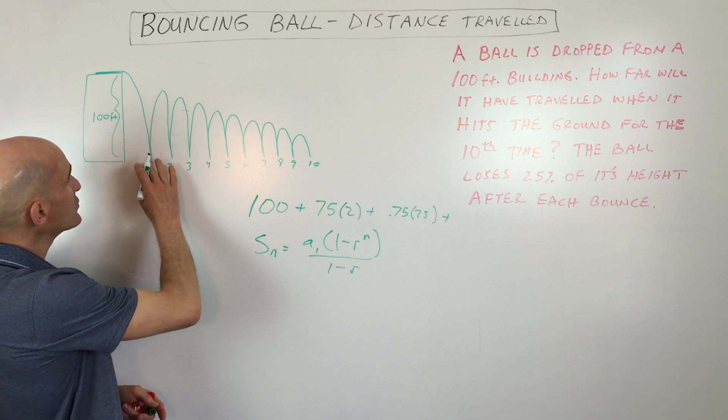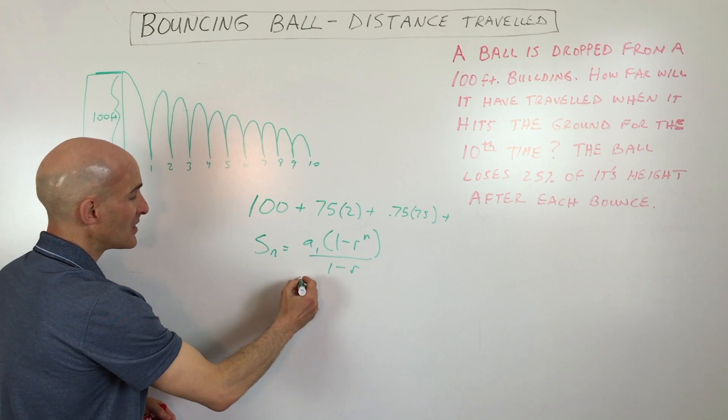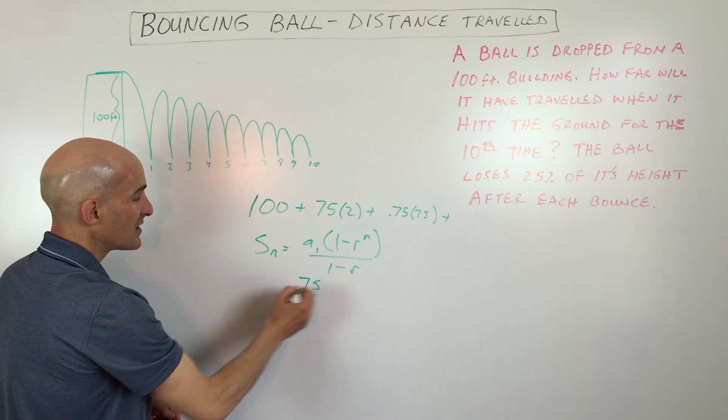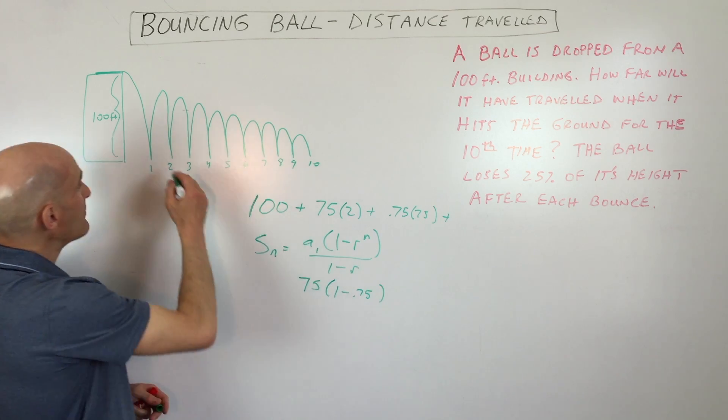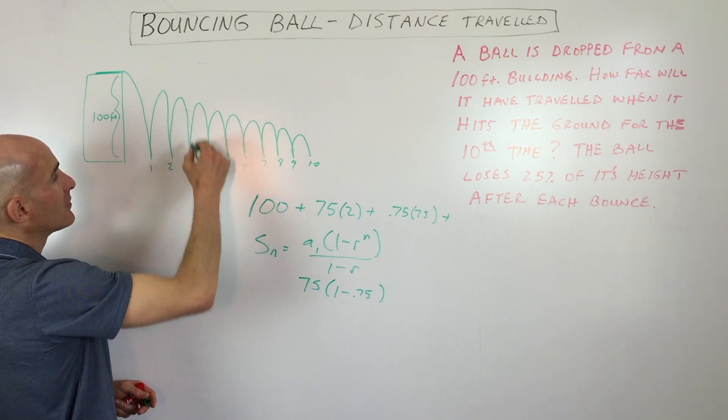So what we're going to do is the first time it bounces up here, that's going to be our first term. We're going to treat that as 75 feet. The ratio is 0.75. And then what happens is you can see it's going to go up and down.